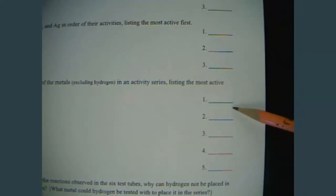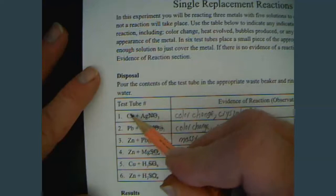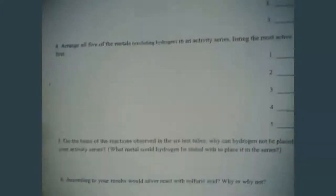So the magnesium, silver, copper, let's get them all here, the silver, copper, lead, zinc, and magnesium in order. So, we're excluding hydrogen.